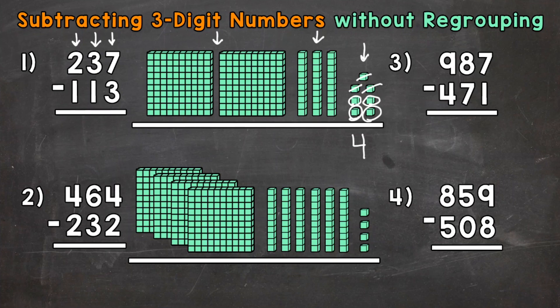Now we move to the left and move to the tens place. So we have three tens minus one ten. We need to subtract or take away one ten. Let's take away one ten — we have two tens left. So we put a two in the tens place in our answer.